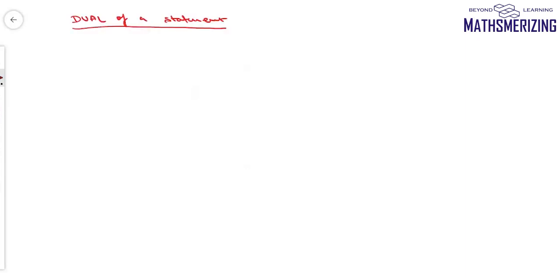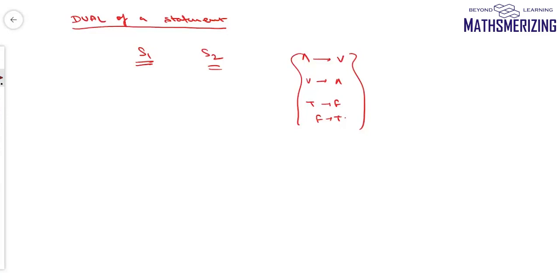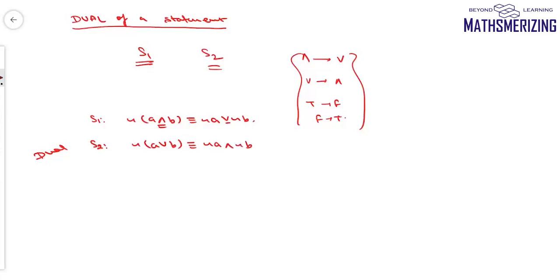Another concept in mathematical reasoning is the dual of a statement. Two statements S1 and S2 are said to be duals of each other if one can be obtained from the other by replacing AND with OR and OR with AND, and replacing true with false and false with true. For example, S1: ~(A∧B) ≡ ~A∨~B. The dual of this statement is: ~(A∨B) ≡ ~A∧~B, obtained by replacing ∧ with ∨ and ∨ with ∧ throughout.